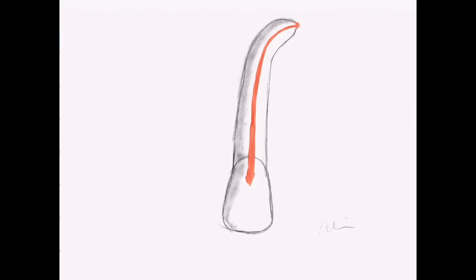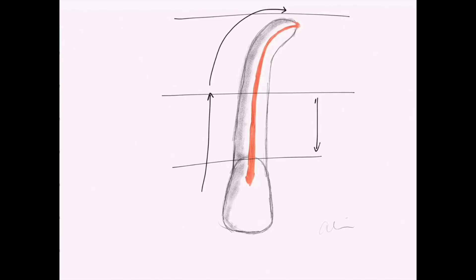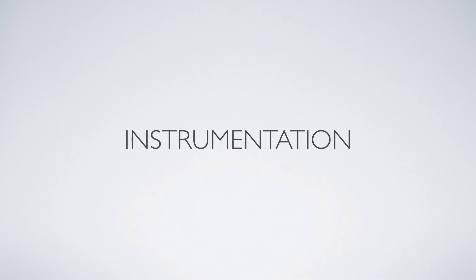For example, in a curved lateral incisor there is a straight part in the coronal half of the canal and a curvature in the apical half. As a result, we need to apply our knowledge of instrument design and metallurgy and hybridize — or blend — shaping instruments of different designs and metallurgy to use them most effectively in the parts of the root canal where they perform best.